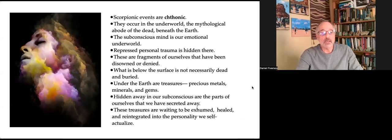Scorpio events are chthonic. They occur in the underworld, the mythological abode of the dead beneath the earth. The subconscious mind is our emotional underworld. Repressed personal trauma is hidden there. These are the fragments of ourselves that have been disowned or denied, what shamanism calls soul loss.